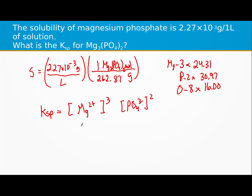So for every magnesium phosphate that dissolves, there would be three magnesiums and there would be two phosphates.